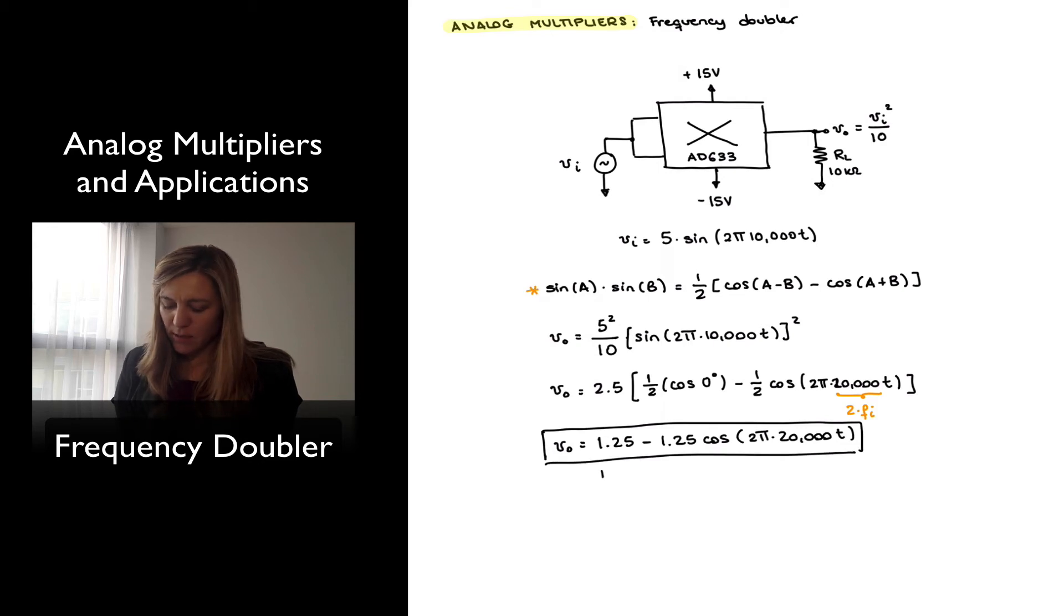So again I have my output signal, which has a DC offset of 1.25, and then consists of a sinusoid of amplitude 1.25 volts and frequency equals 20 kHz, which is, again, 2 times the input frequency.